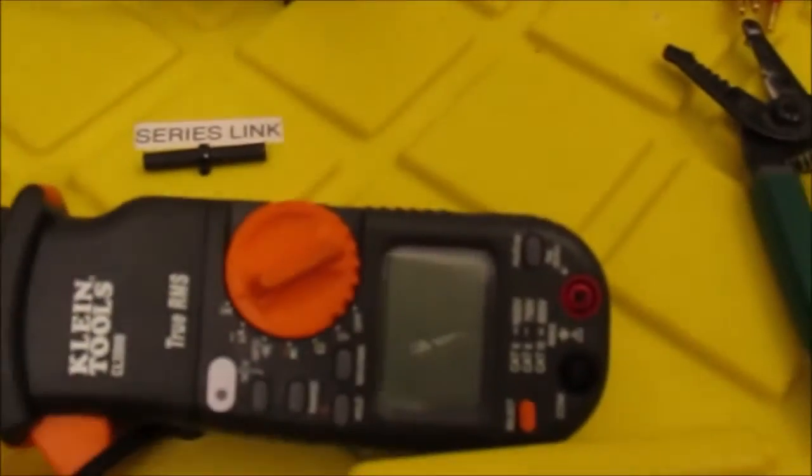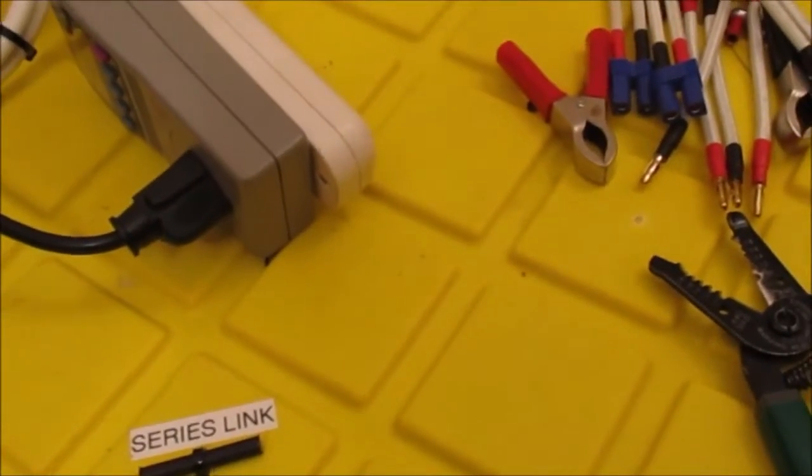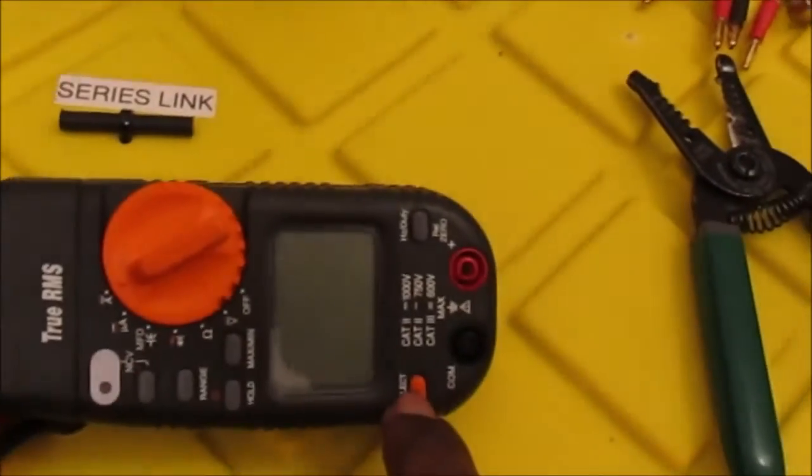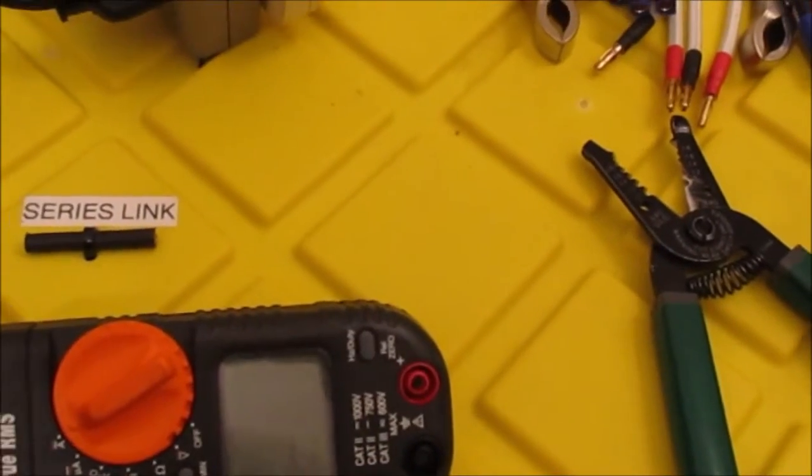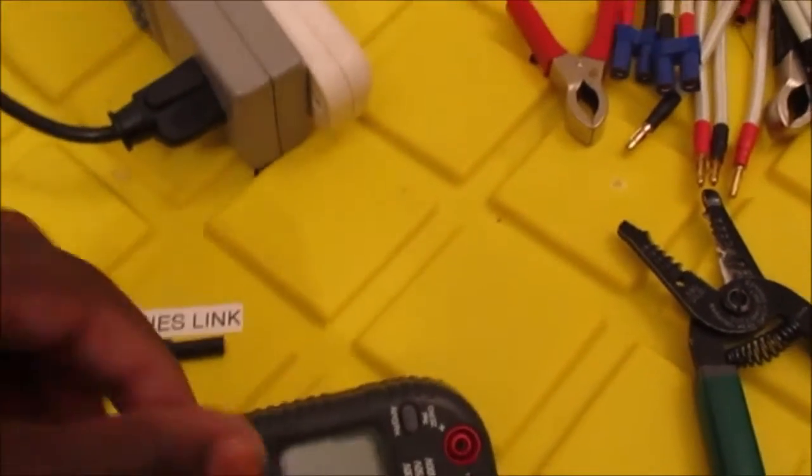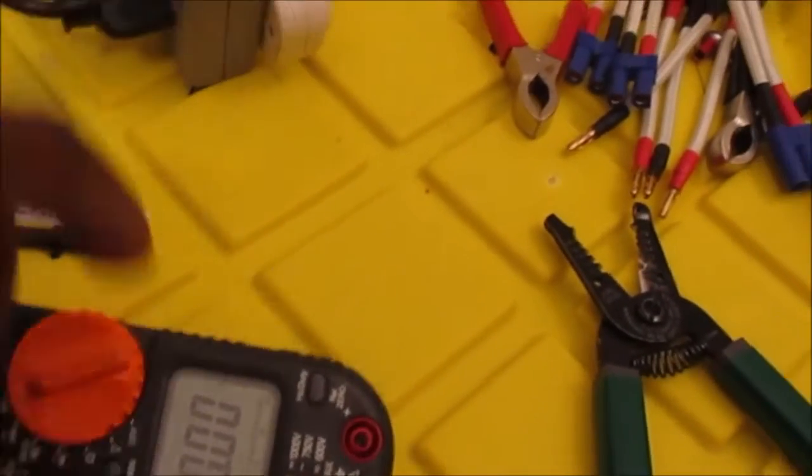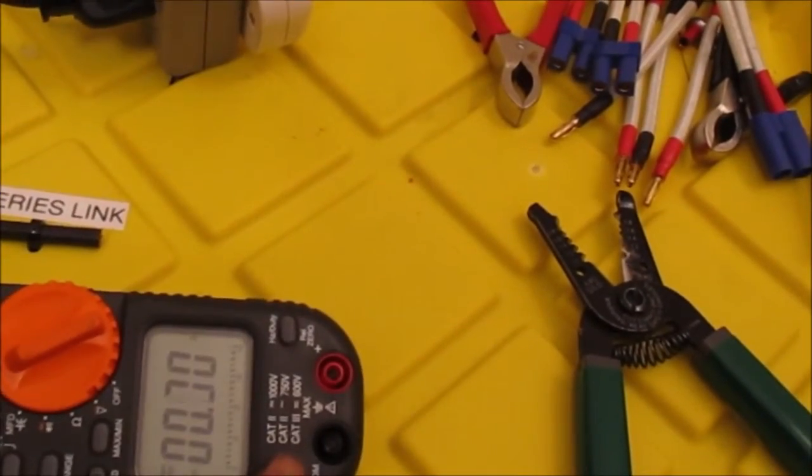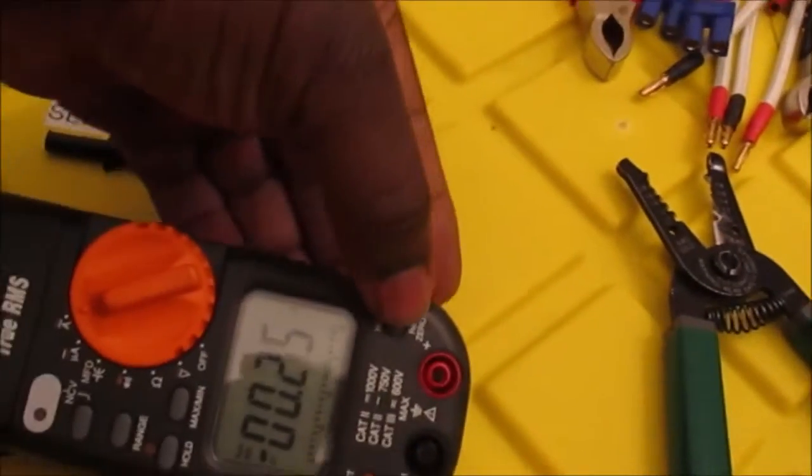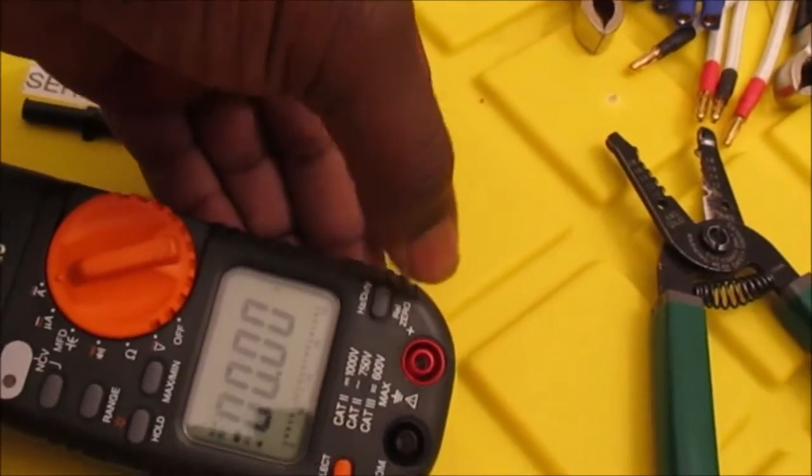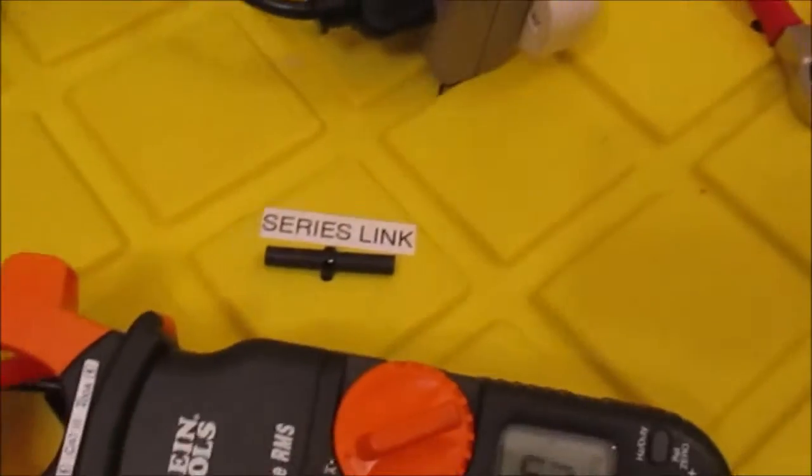I also have a DC clamp meter and we're going to go ahead and turn that on. Let's see... alright, change it over to DC amps and then zero it out. Alright, so the DC clamp meter is ready to go.